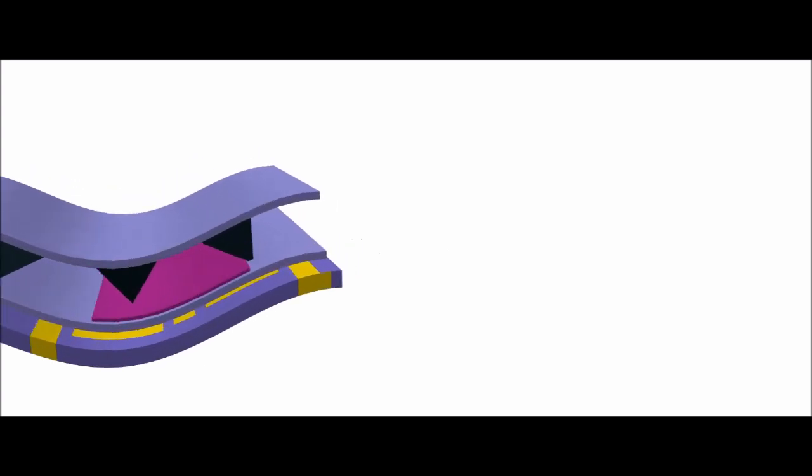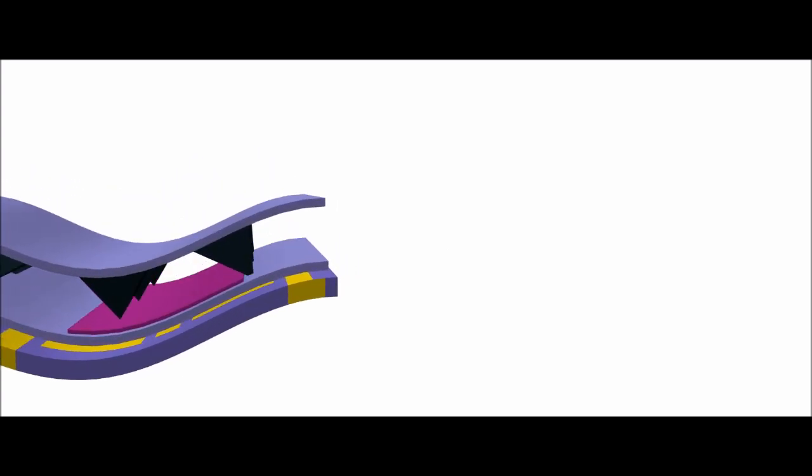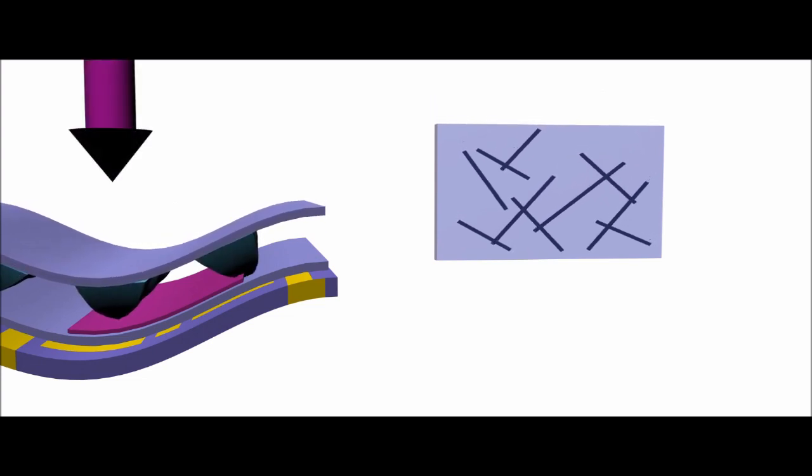The sensor is made of pyramid structures of insulating rubber filled with conductive carbon nanotubes. As the pressure on the sensor is increased, the carbon nanotubes move closer together and more electricity can flow through the sensor.